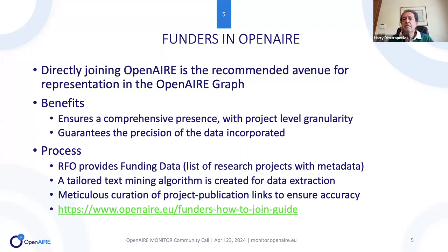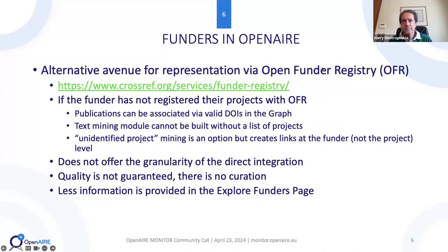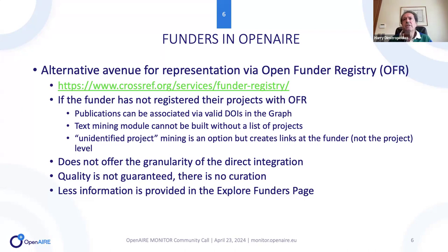Direct integration means funders provide their funding data — basically a list of project metadata — and we create a text mining algorithm tailored for them, with a process of meticulous curation for the project-publication links. This ensures comprehensive presence at project-level granularity and guarantees data precision. About a year ago, many funders wanted dashboards just for publication numbers, so we added another way via the Open Funder Registry. If projects aren't registered there, only publications can be associated via valid DOIs, and the text mining module cannot be built without a project list.